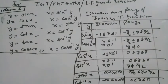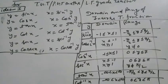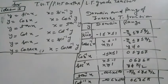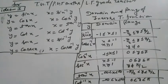For sin inverse x, the domain is minus 1 to 1 and the range is minus pi by 2 to pi by 2, equal to 0. For cos inverse x, the domain is minus 1 to 1 and the range is 0 to pi. In inverse x, the x values are minus 1 to plus 1 and the range is 0 to pi.